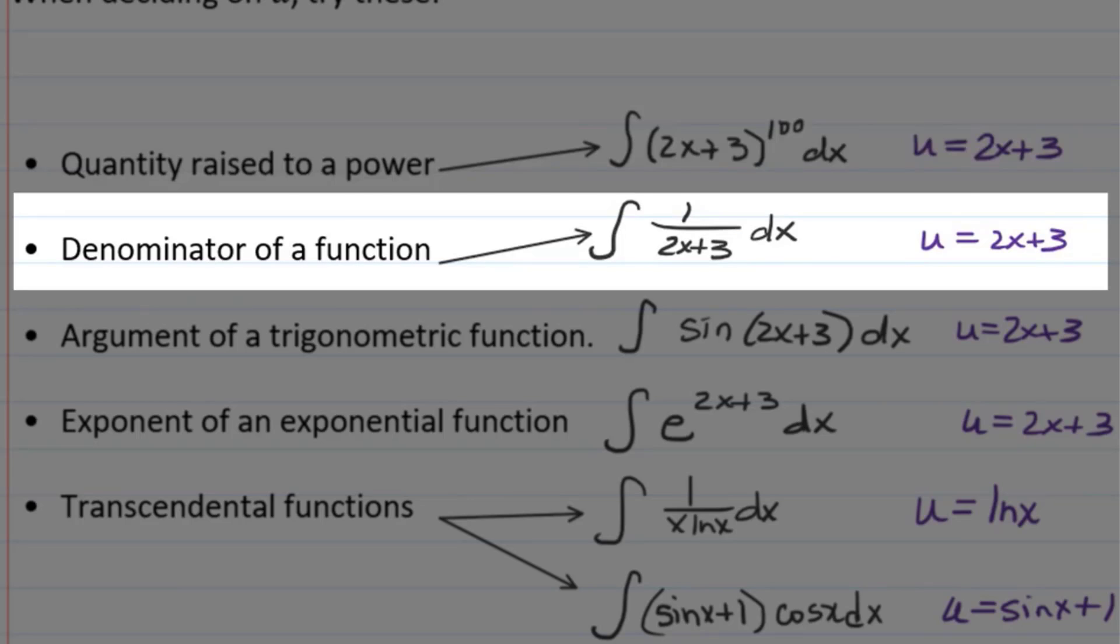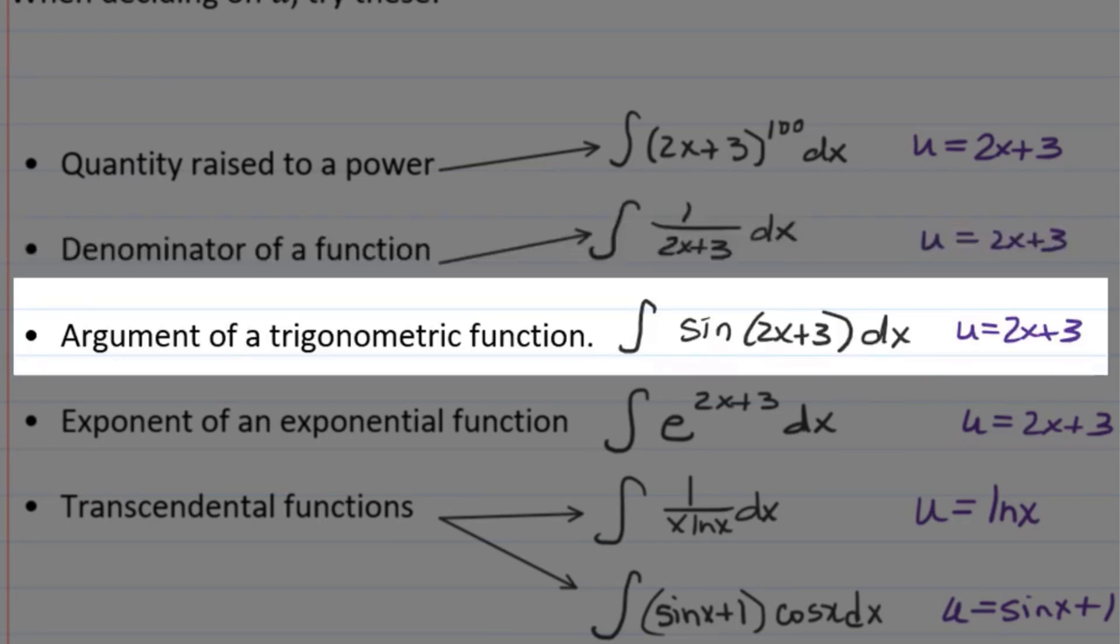Or you can let U be the denominator of a function in the integrand. For example, here I have 1 over 2x plus 3. You could let, again, U equal 2x plus 3. You could also let U be the argument of a trig function, whether it be sine, cosine, tangent, whatever's inside the argument, like this 2x plus 3. Sometimes if you let U equal that, you can get a nice U-substitution.